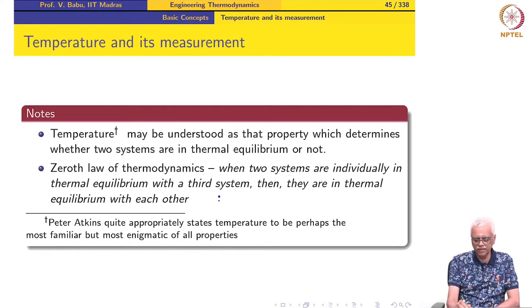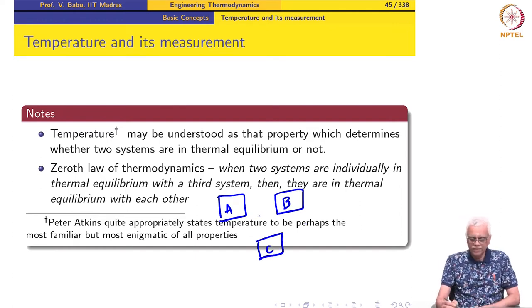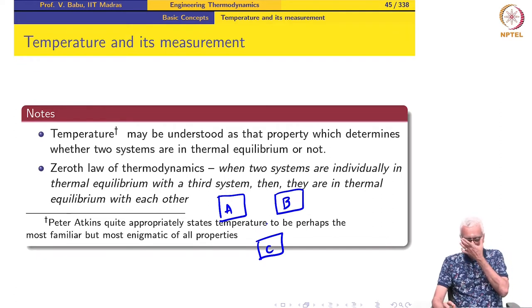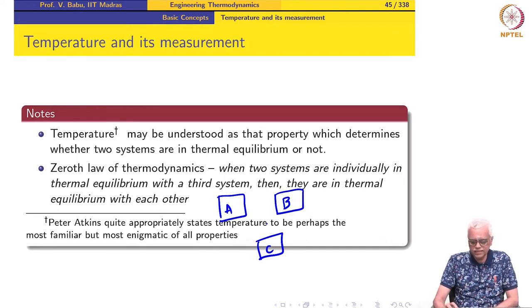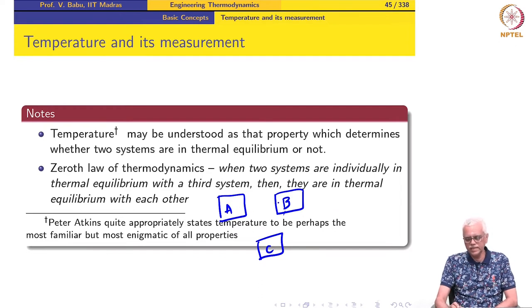Let us say we have three blocks — let us call them block A, block B, and block C. When I bring blocks A and C in contact and they are in thermal equilibrium, and then I bring blocks B and C in contact and they are also in thermal equilibrium, then what this means is that A and B need not be brought together — they will already be in thermal equilibrium.